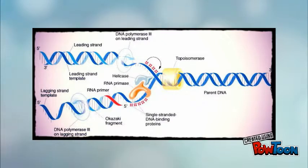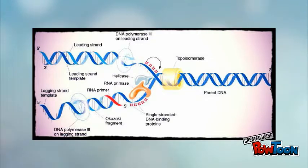For the lagging strand, it runs 3' to 5' and the DNA polymerase runs 5' to 3', so it copies backwards.